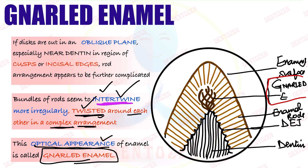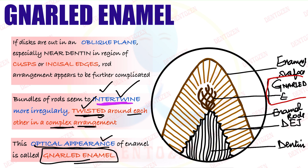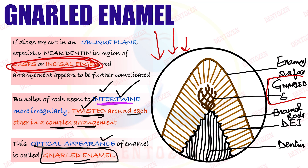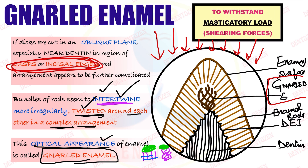Why does this twisting happen? The cusp and incisal edge region is where maximum masticatory load occurs when we chew food. If the rods were straight, they could easily break under pressure. But when these rods are twisted around each other, they strengthen up and can resist the load better without fracturing. So this twisting or intertwining of enamel rods in gnarled enamel serves to withstand masticatory load, particularly shearing forces.